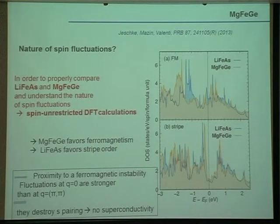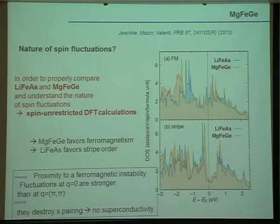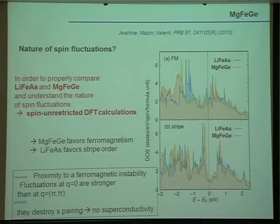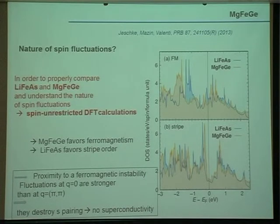Very recently, Gabi and collaborators calculated S(q,ω) for a series of different iron-based superconductors and also for MgFeGe. When they calculate S(q,ω) by considering the pair vertex with various approximations, they find indeed a strong ferromagnetic instability in MgFeGe, confirming our picture.